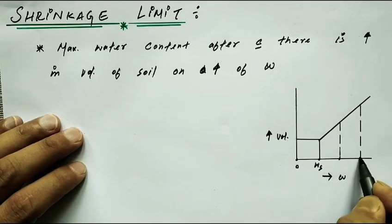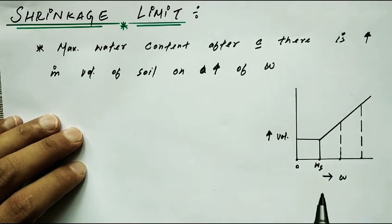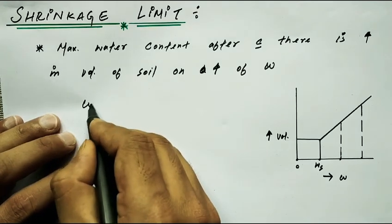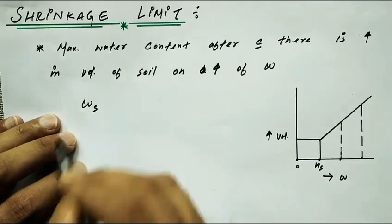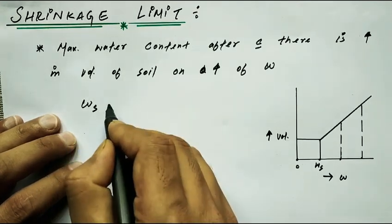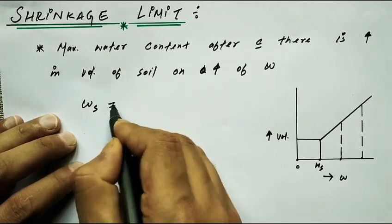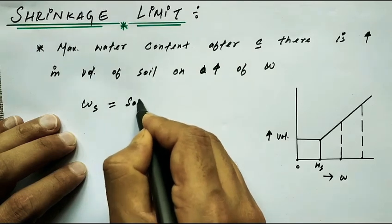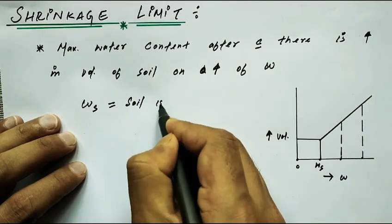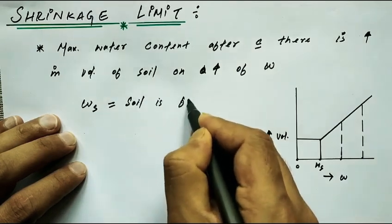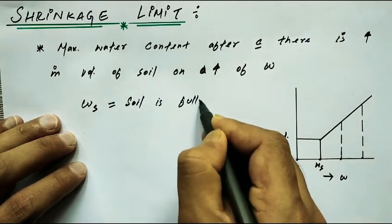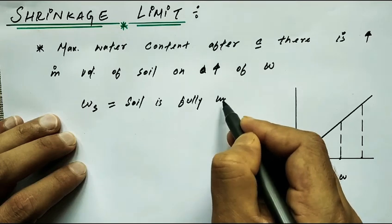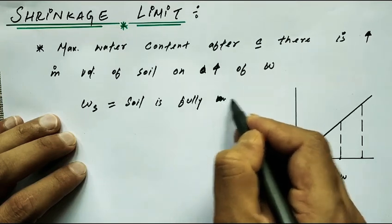At shrinkage limit, plastic limit, and liquid limit — at the shrinkage limit WS, the soil is fully saturated. This is a very important point for GATE examination.